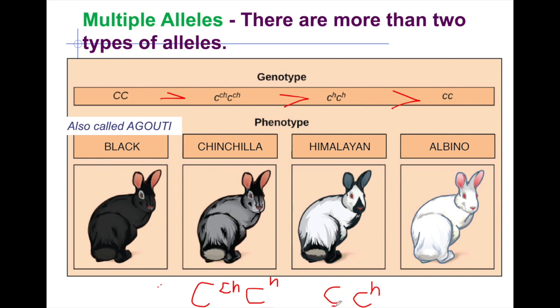For another example: if you have agouti and Himalayan alleles together, since agouti is the strongest, it will be expressed. So the phenotype will be agouti, but the organism carries genes for being Himalayan.